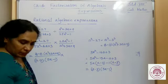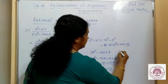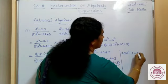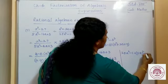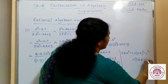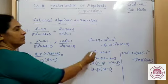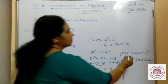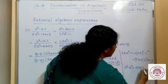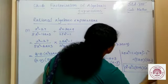Next is 25a² - 1. This can be written as (5a)² - 1². Factors are (5a + 1)(5a - 1). This is the a² - b² = (a + b)(a - b) formula we are using here for factorization. And for a³ - 27, the formula used was a³ - b³ = (a - b)(a² + ab + b²).